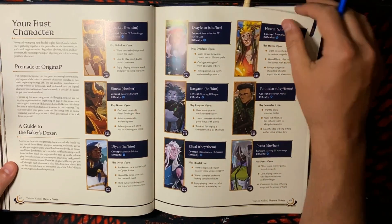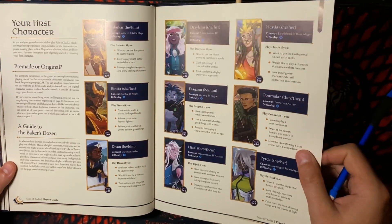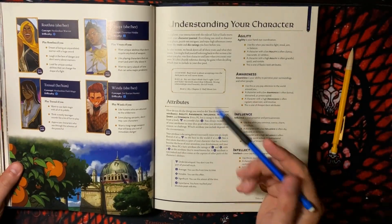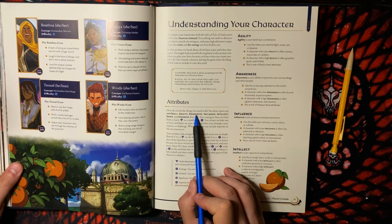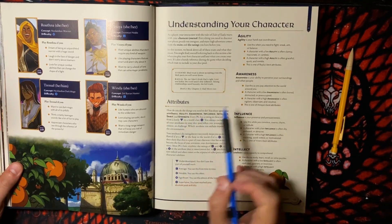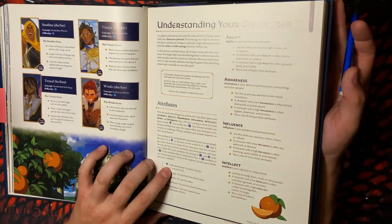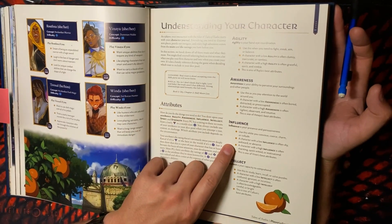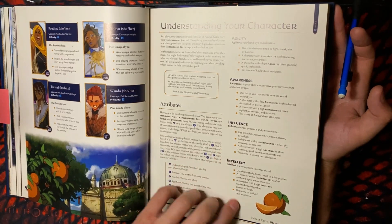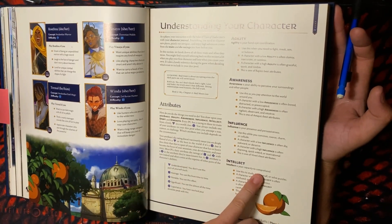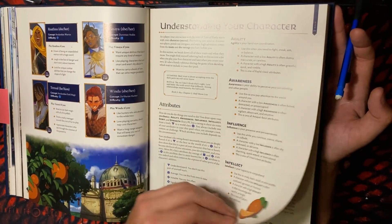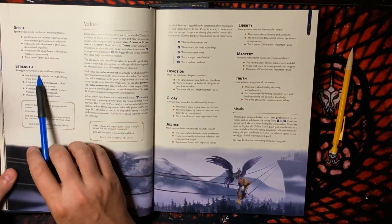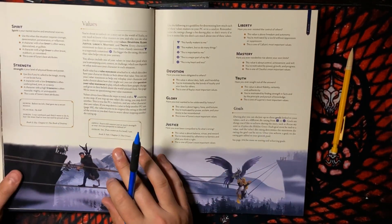Now we get to the Player's Guide — understanding your character. Your attributes are agility, awareness, influence, intellect, spirit, and strength. Agility is hand-eye coordination. Awareness is your ability to perceive your surroundings and other people. Influence is your presence and persuasiveness. Intellect is your capacity to comprehend. Spirit is your mental resolve and emotional reserves. Strength is your level of physical fitness and power.